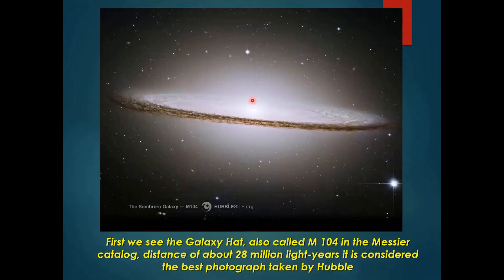Now we are coming to some of the very fascinating images of galaxies captured by the Hubble telescope. This is called the Sombrero Galaxy — it is around 28 million light years away from the Hubble telescope, and it is also called the M104.